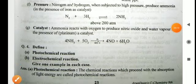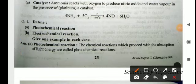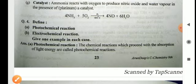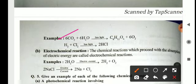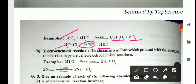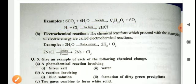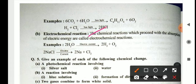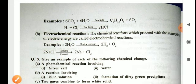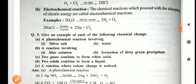These are the chemical reactions. Now define photochemical reactions and electrochemical reactions. Photochemical reactions: those reactions which proceed in the presence of sunlight are called photochemical reactions. Example: 6CO₂ + 6H₂O (sunlight) → glucose + O₂; and H₂ + Cl₂ (sunlight) → 2HCl. Electrochemical reactions: chemical reactions which proceed with the absorption of electric energy are called electrochemical reactions. Examples: 2H₂O → 2H₂ + O₂; 2NaCl (electric current) → 2Na + Cl₂.